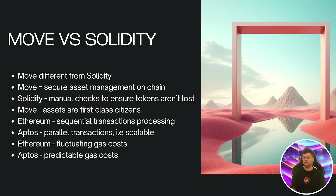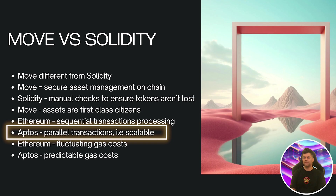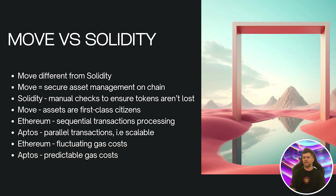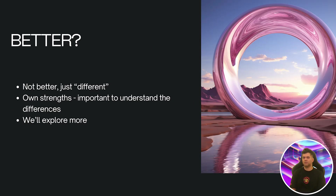Another key difference is in transaction execution and the gas model. Ethereum processes transactions sequentially while Aptos can execute transactions in parallel — a big deal for scalability. As for gas, Aptos uses a different model: instead of gas prices fluctuating widely based on network congestion, Aptos aims for more predictable gas costs, making it easier to estimate transaction costs for your dApps. Neither approach is inherently better, they're just different, and understanding these differences will help you leverage Aptos effectively.